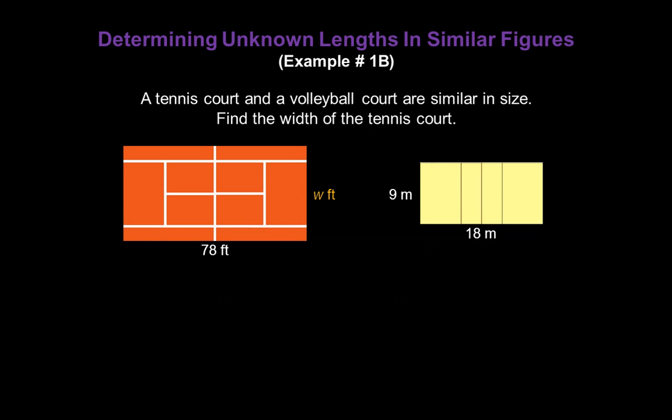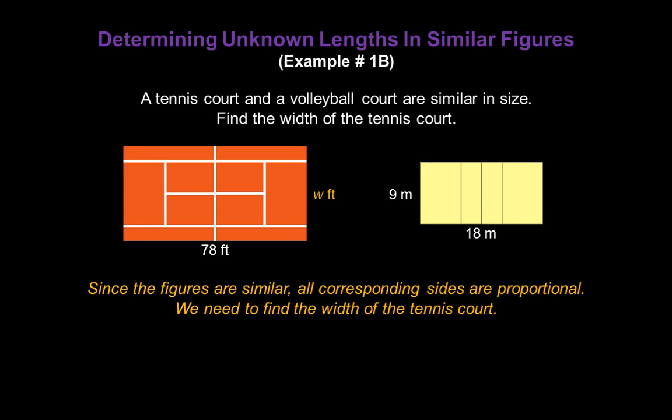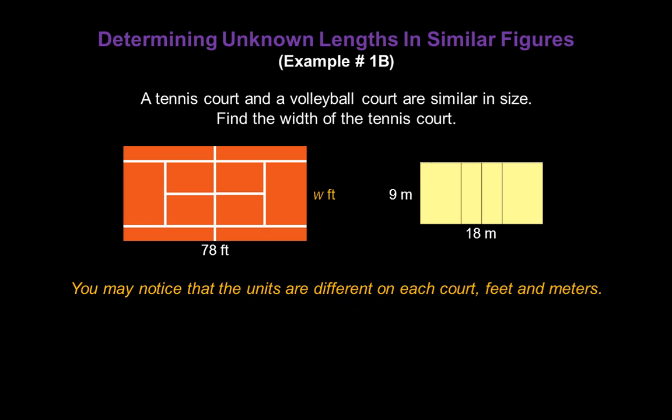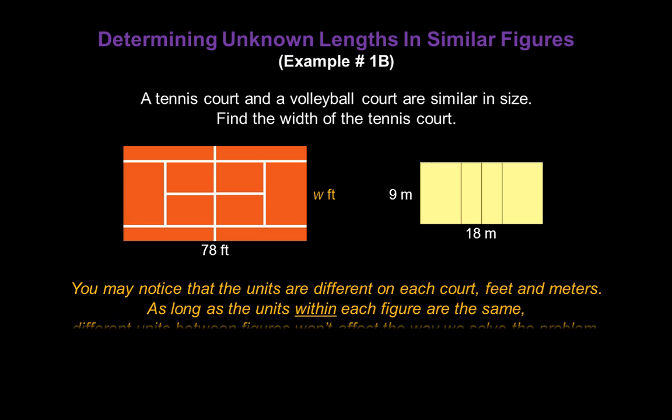Here we have a tennis court and a volleyball court. And it tells us the courts are similar in size. We need to find the width of the tennis court. Now since the figures are similar, all corresponding sides are going to be proportional. Now you may notice that the units are different on each court. We have feet on the tennis court and meters on the volleyball court. But that's okay. As long as the units within each figure are the same, different units between figures won't affect the way we solve the problem.